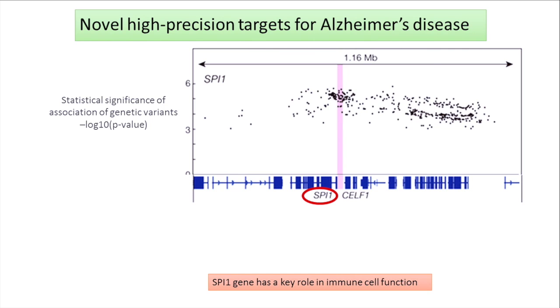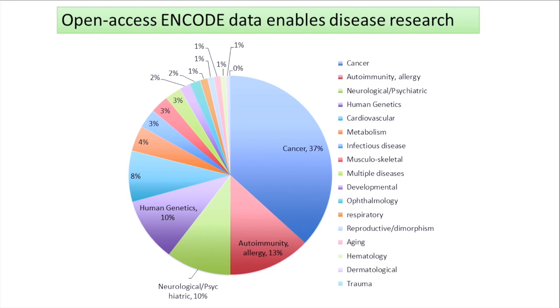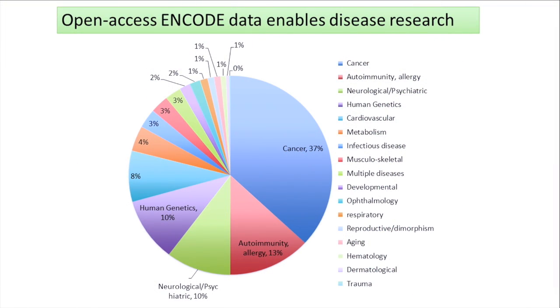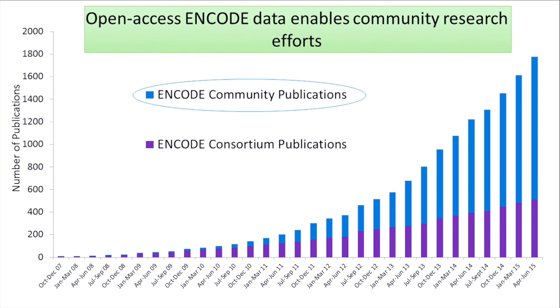We are also able to identify interesting and important novel drug targets for Alzheimer's using this approach. Just like the ImageNet dataset dramatically changed how researchers access and solve problems, many researchers have been using our open database to perform a variety of interesting research across a variety of diseases. The number of papers has been exponentially increasing every year using our datasets, and most of them are not from our consortium but from the broader community.